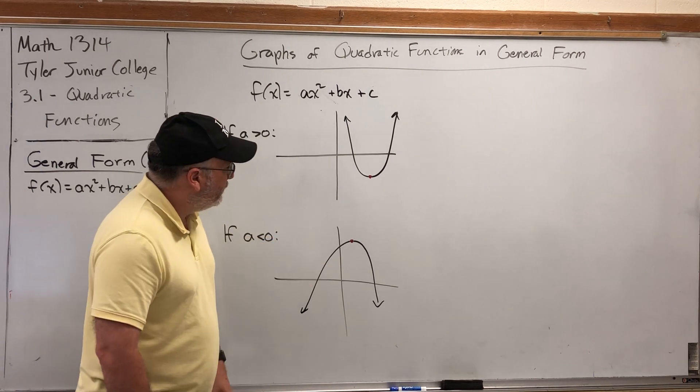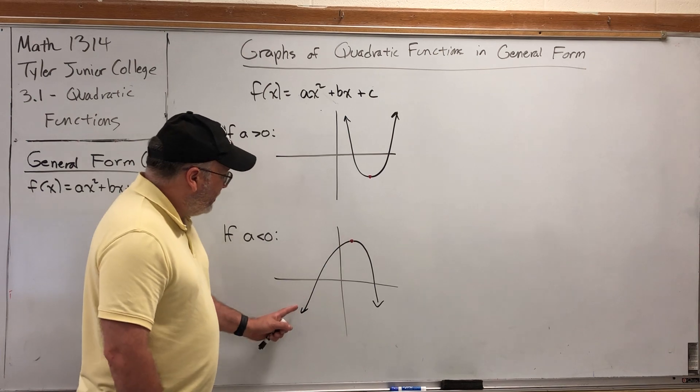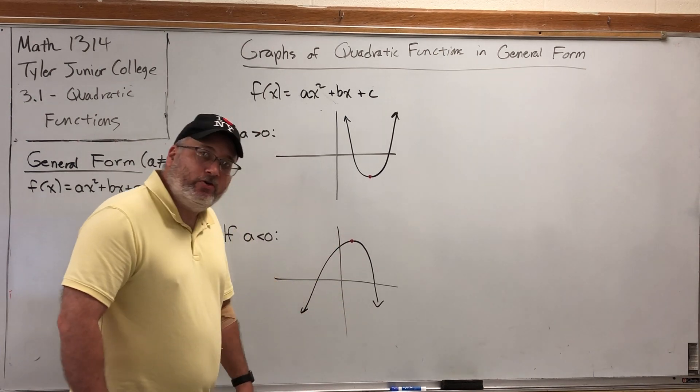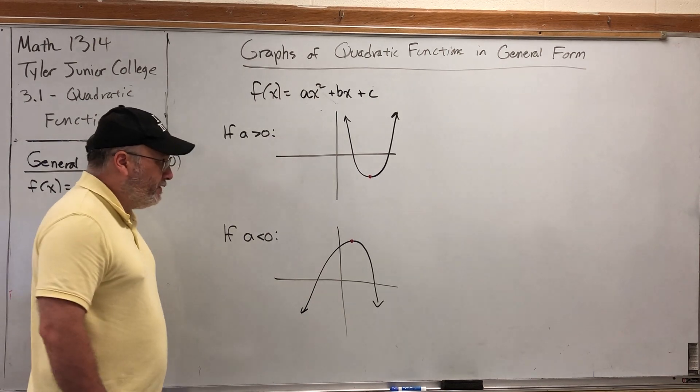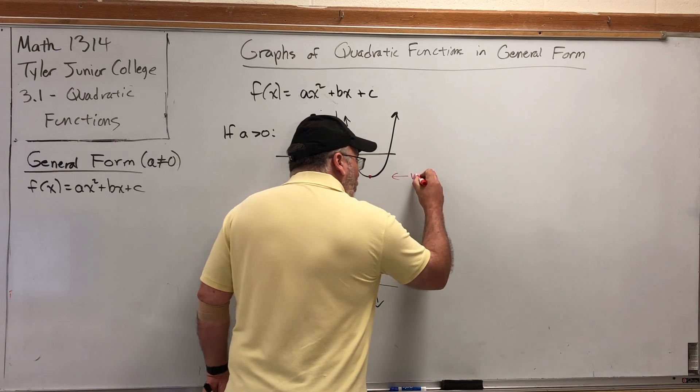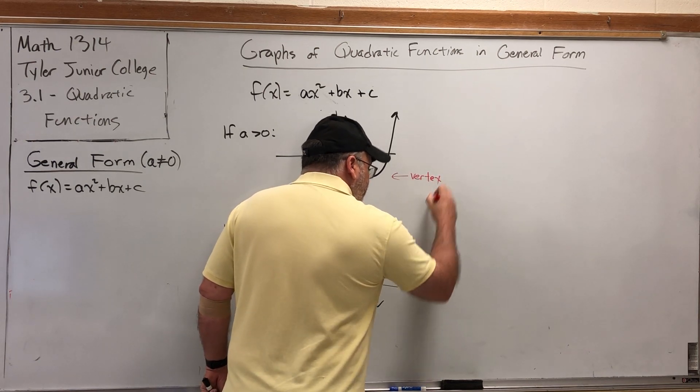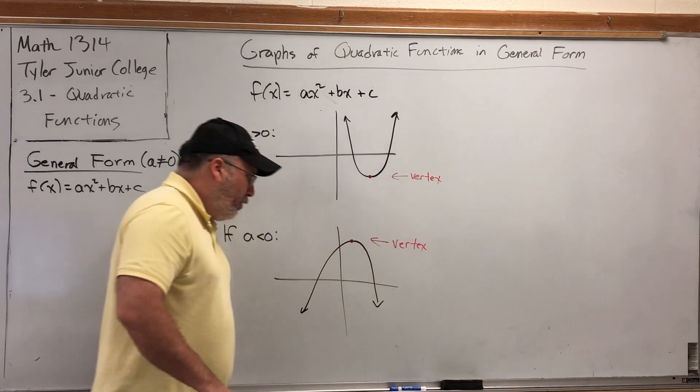If the parabola is opening upwards, it transitions from decreasing to increasing—we referred to that as a relative minimum. On the upside-down parabola, it starts increasing then turns to decreasing—a relative maximum. But in the context of a parabola, that turning point is called the vertex.